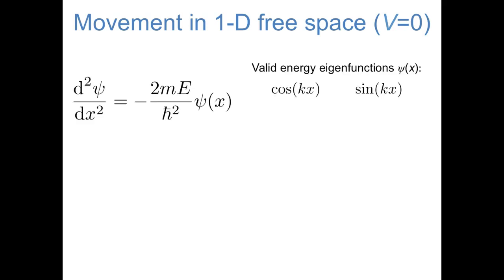One type of function where the second derivative equals a negative constant times the function itself is a sine or cosine of kx. The second derivative of cos(kx) is −k² times cos(kx), and similarly, the second derivative of sin(kx) is −k² times sin(kx). Alternatively, you might think of complex exponentials — for example, e^(ikx). The second derivative of e^(ikx) is i²k²e^(ikx), and because i² equals −1, the second derivative is −k² times e^(ikx). Something similar holds for e^(−ikx).